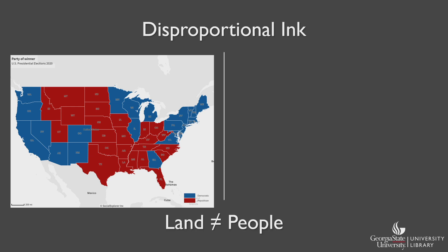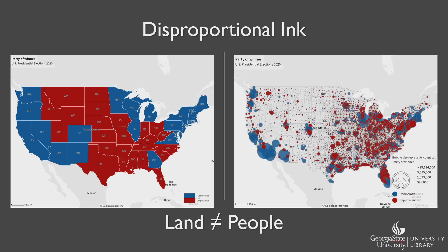Another common issue we see with data visualizations is the principle of proportional ink, which is the idea that we often associate more ink on a page — or more of a particular color on a map — to mean that the value associated with that color is also larger. This can lead to confusion, especially when looking at maps. Due to this principle, this map makes it look like the Republican candidate could have won because there is so much red ink. But the size of the land on the map is not the same as the size of the population. This is where population bubbles can be useful — the larger the bubble, the larger the population — making the amount of ink used for each party's votes more proportional to the actual number of votes.